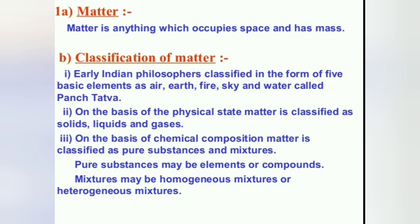Our surroundings have a large variety of things with different shapes, sizes and textures. Everything in this Universe is made up of material which scientists have named matter. Examples include papers, food, stones, clouds, stars, plants and animals. What is matter? Anything which occupies space and has mass is called matter.